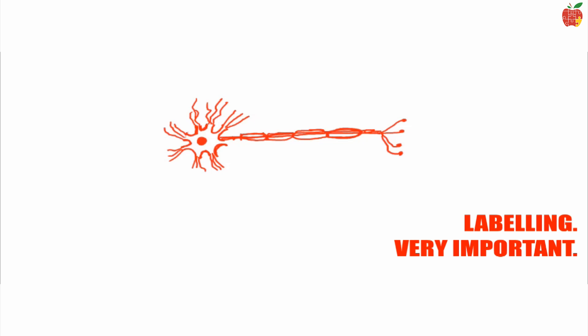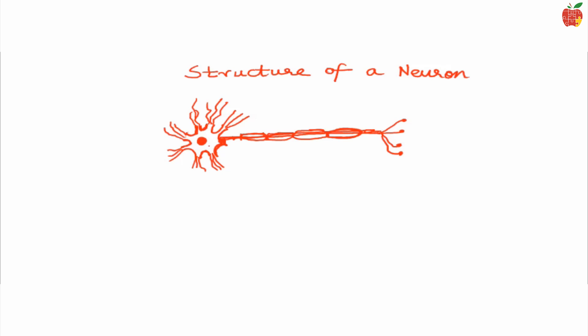Oh yes, labeling. That is very important. Remember, always label your diagram and assign a title to it. In this case, it would be: Structure of a Neuron.